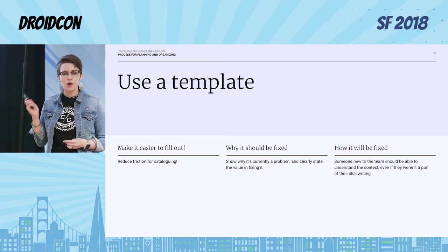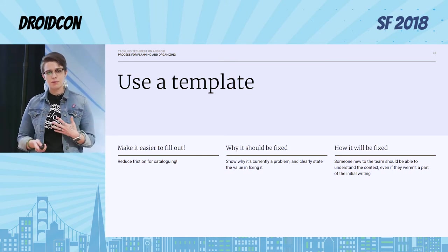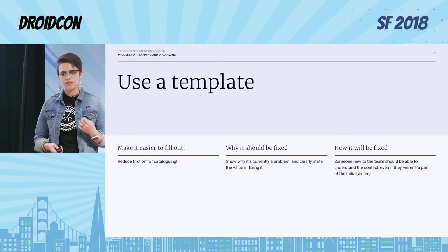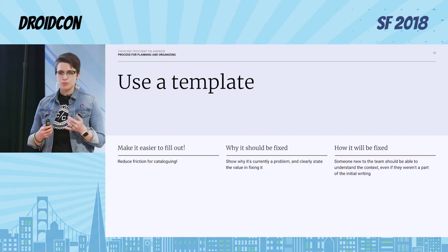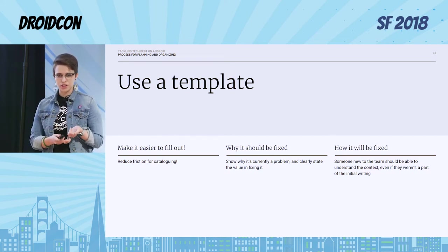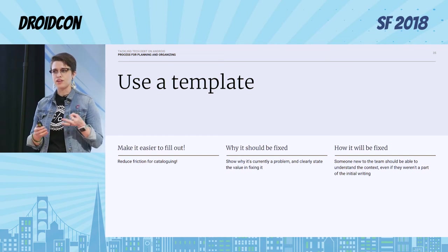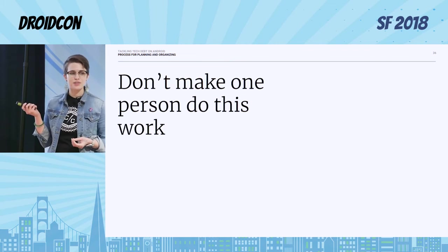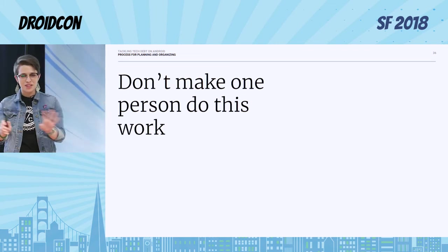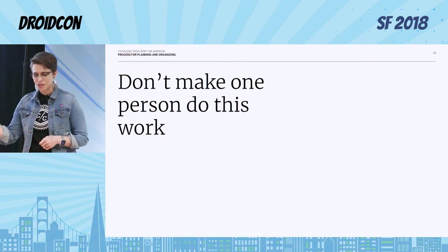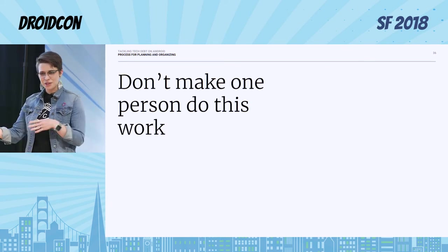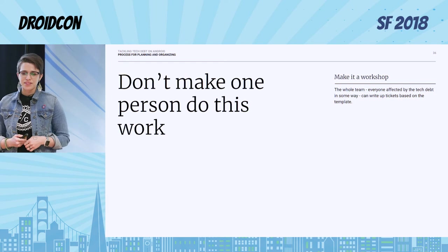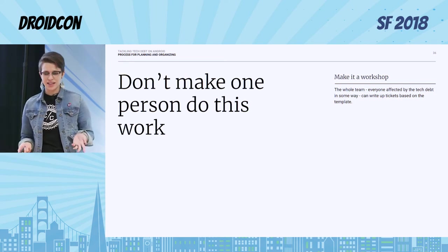It's also super important to document how it will be fixed. If someone new to the team wants to start working on a couple of tickets, they should be able to understand the context even if they weren't part of the initial writing of that ticket. Mention where it's going to be fixed, the method you're going to use, and the scope of it. Also super important: don't make one person do all this work. Make it a workshop because everyone on your team is affected by tech debt in some way — do it together, collaboratively.